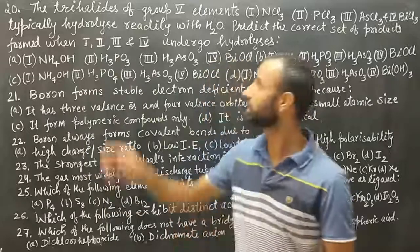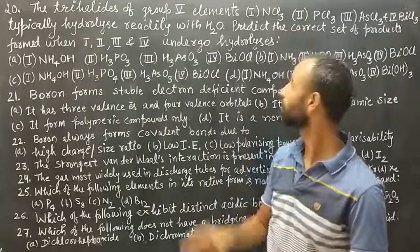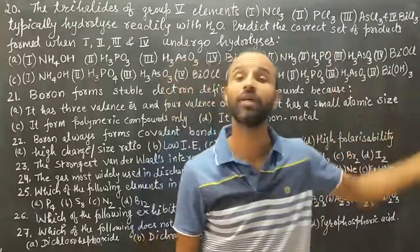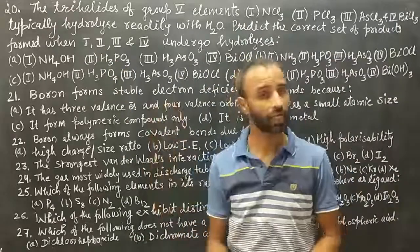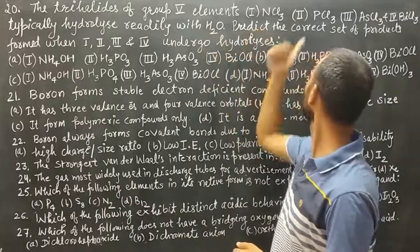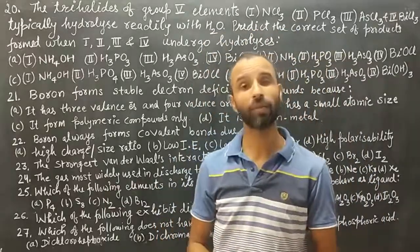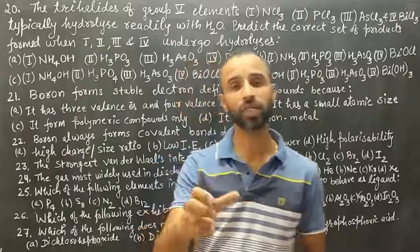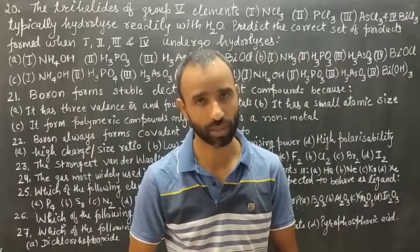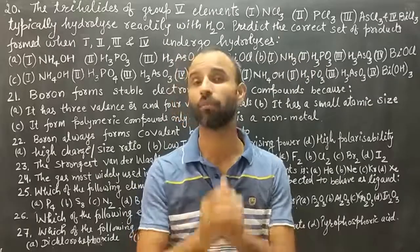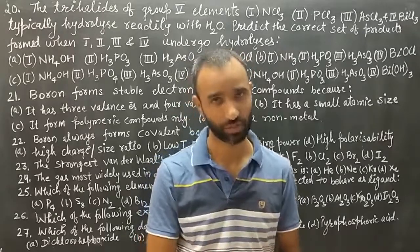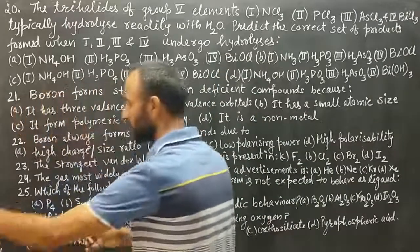The first question: the trihalides of group 15 elements — NCl3, PCl3, AsCl3, and BiCl3 — typically hydrolyze readily with water. Predict the correct set of products. Keep in mind, all the halides of group 15 are readily hydrolyzed, but the products are different for different trihalides. Let us see what products are formed.